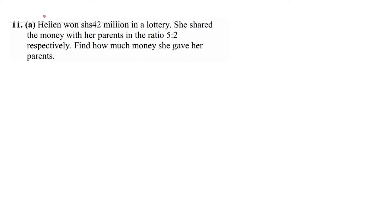Helen won 42 million in a lottery. She shared the money with her parents in a ratio of 5 to 2, respectively. Find how much money she gave her parents. I'll be doing 10 numbers on these topics of rate, ratio, scales, and proportions in this session.